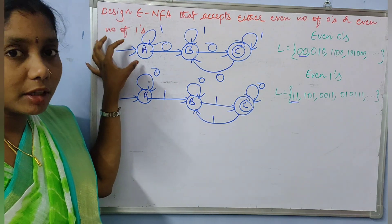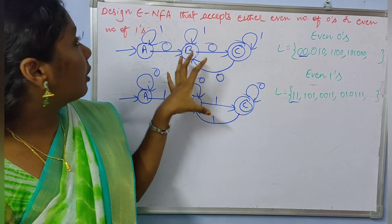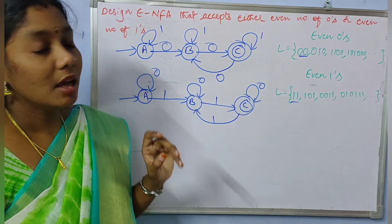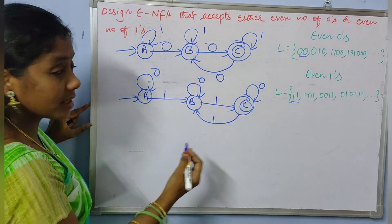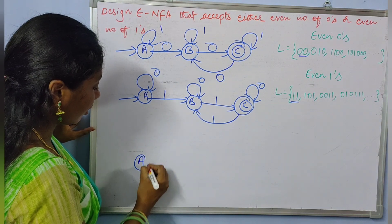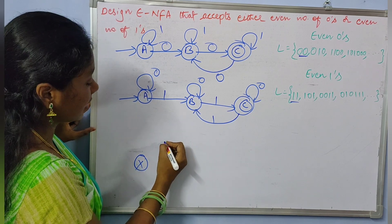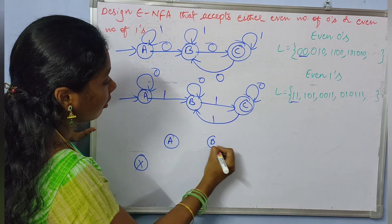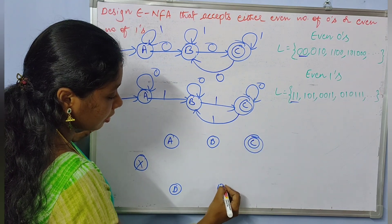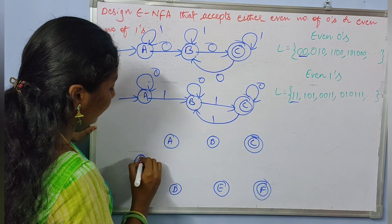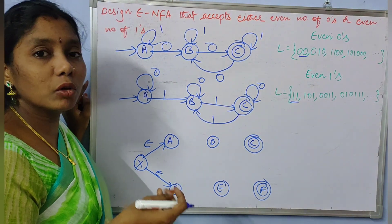This is the design for producing all even number of zeros and this is the design for producing all even number of ones. Now my epsilon NFA should accept either even number of zeros or even number of ones, so it can be solved by connecting these two designs with an epsilon. I am taking a new start state X, connecting to states A, B, C of the first NFA and D, E, F of the second NFA using epsilon transitions, since in epsilon NFA we can have a transition without consuming any input symbol.